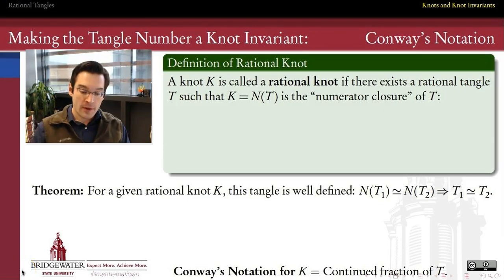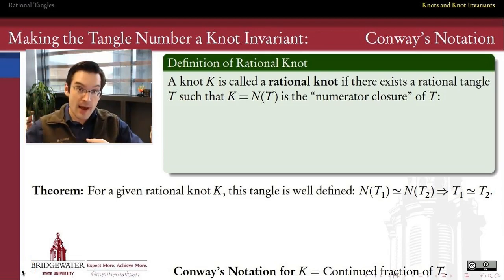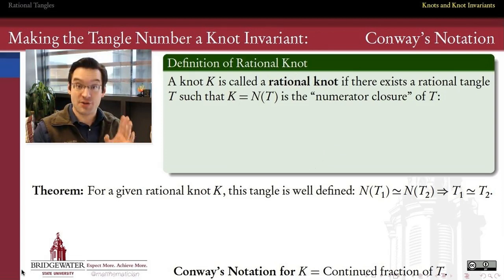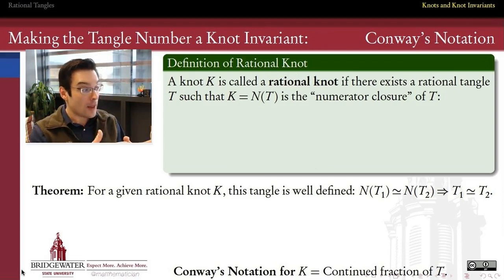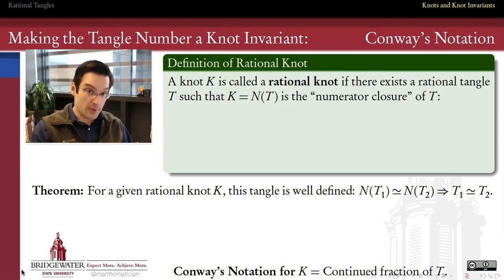First of all, if we want to go from rational tangles to knots, the first observation is that that might actually restrict the kinds of knots we're going to be able to work with. In particular, it's going to limit us to a class of knots called rational knots. By definition, we're going to call a knot a rational knot if there exists a rational tangle whose numerator closure is equal to that knot.